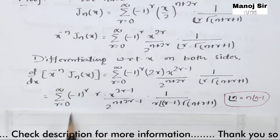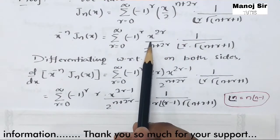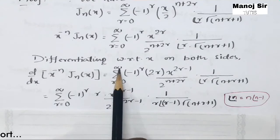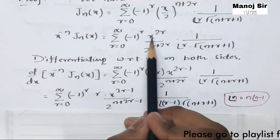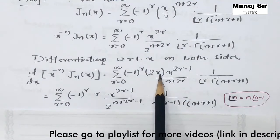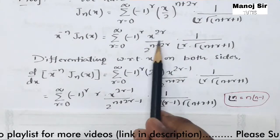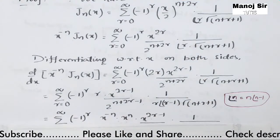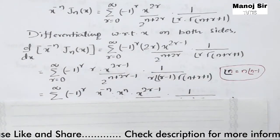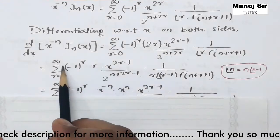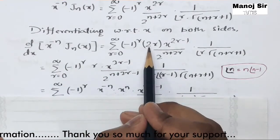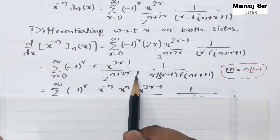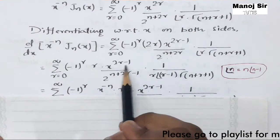Differentiating: d/dx of [x^{-n} J_n(x)] equals summation r=0 to infinity of (-1)^r. Differentiating x^{2r} gives 2r times x^{2r-1}. Taking the 2 into the denominator yields 2^{n+2r-1}, and x^{2r-1} remains. The rest of the expression is unchanged.